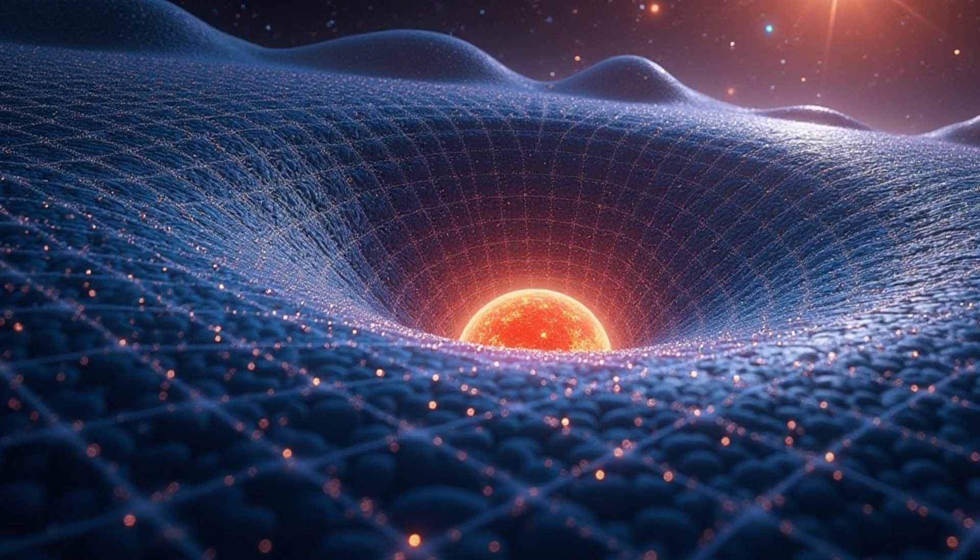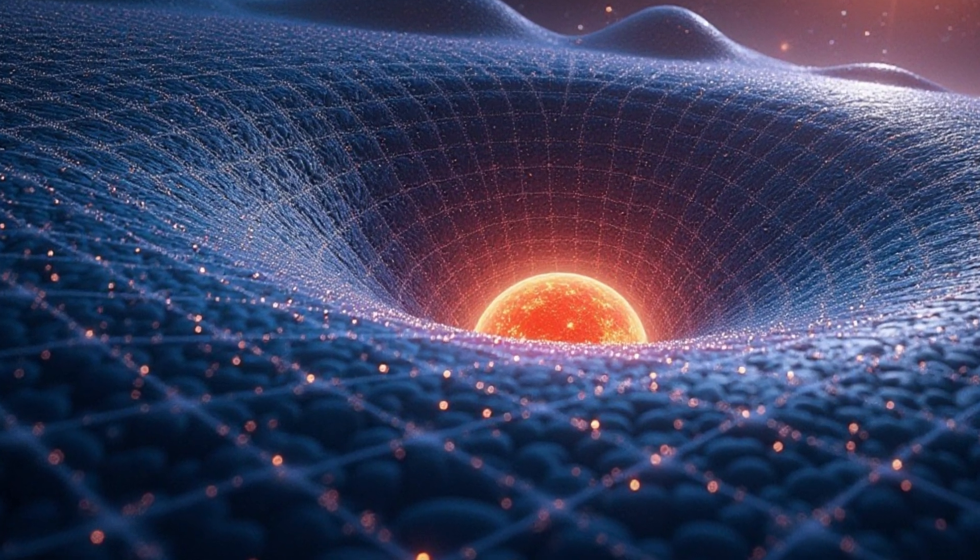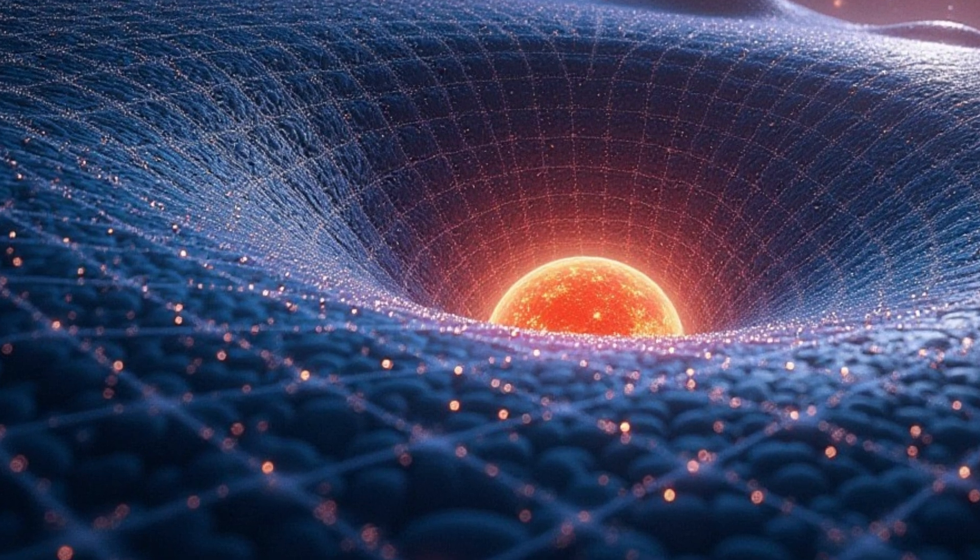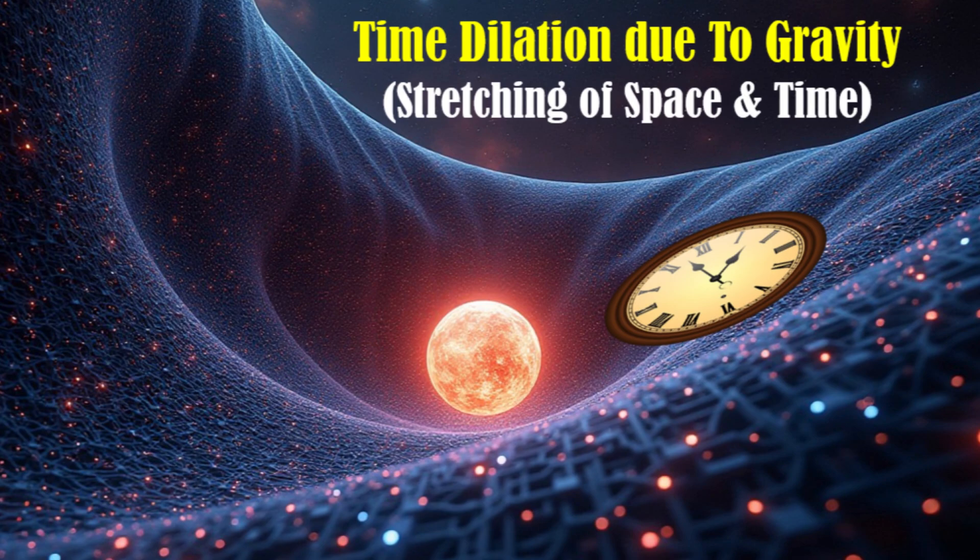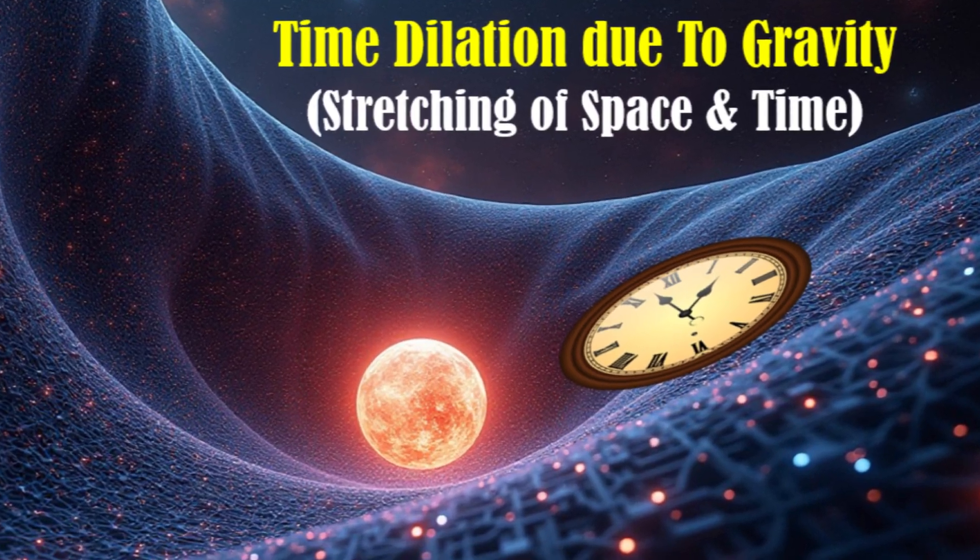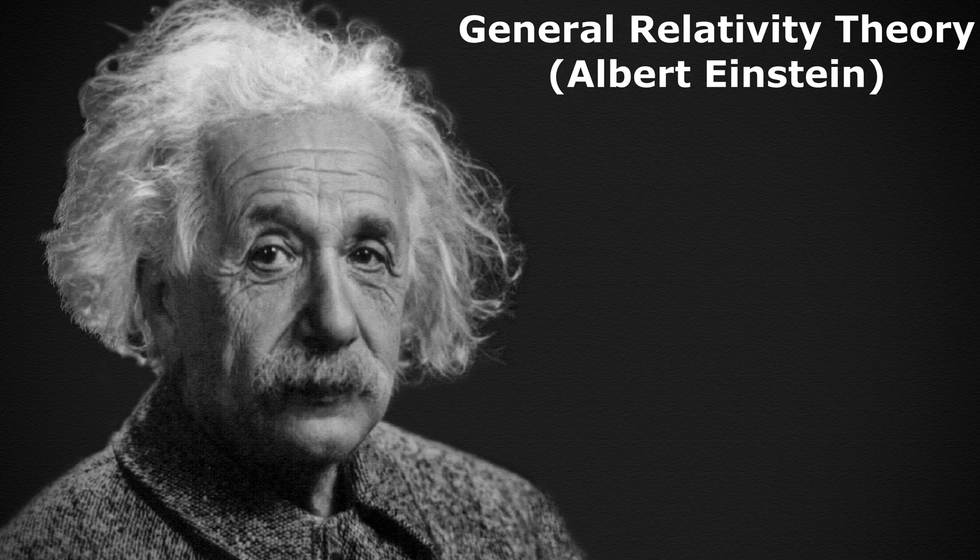This dip is like what happens in space when there is a massive object like a planet or a star. It's not just space that gets bent but also time. This is how gravity is explained through Einstein's relativity theory.